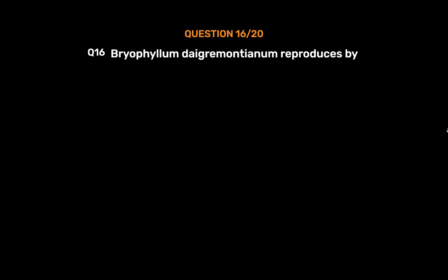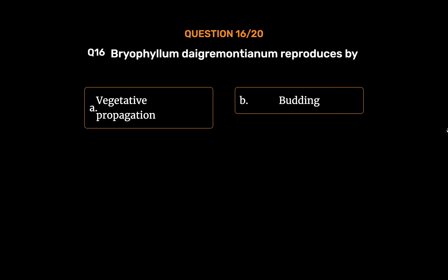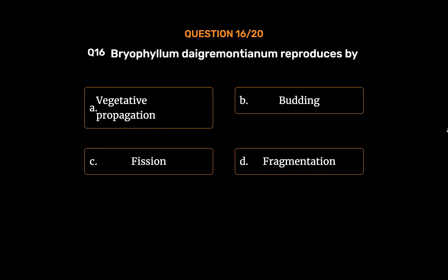Question No. 16: Bryophyllum daigremontianum reproduces by. Option A: Vegetative propagation. Option B: Budding. Option C: Fission. Option D: Fragmentation. The correct answer is Option A: Vegetative propagation.